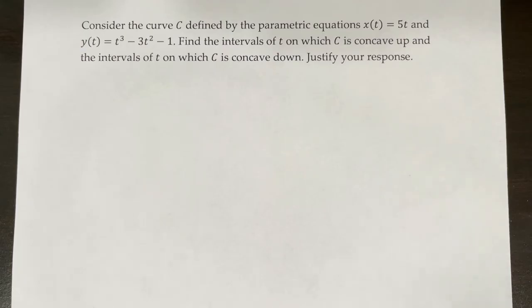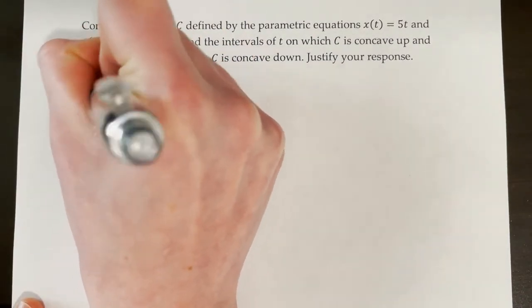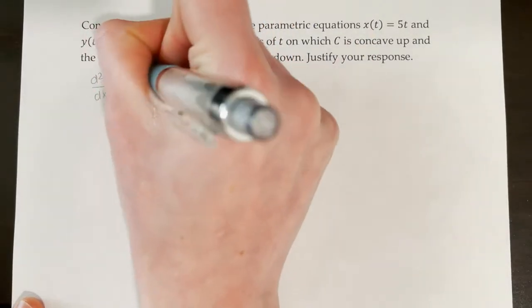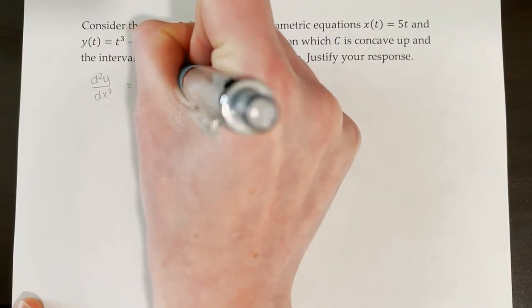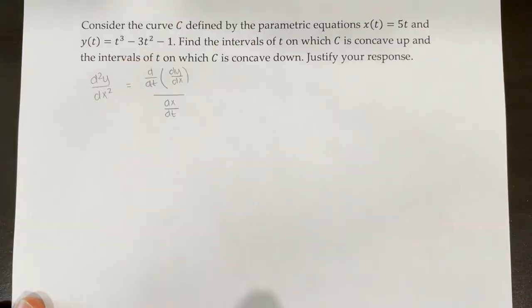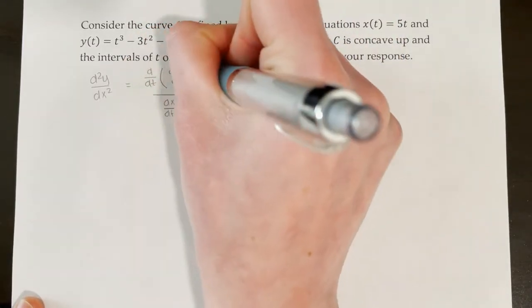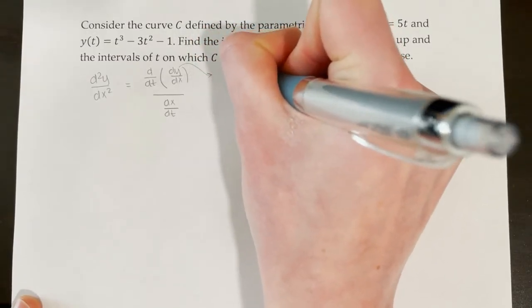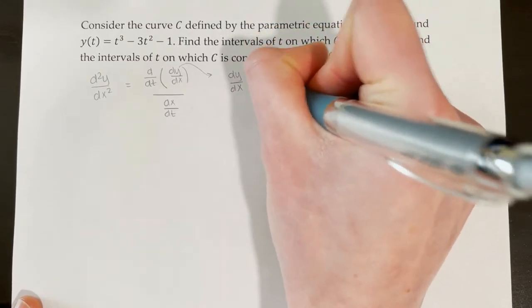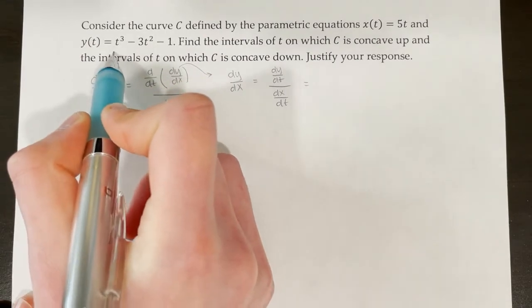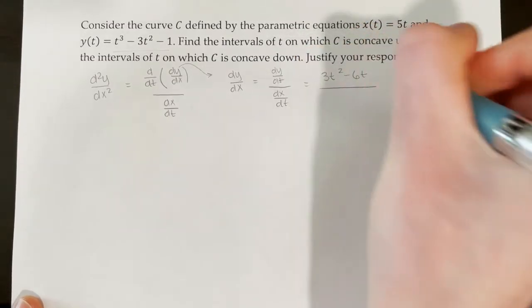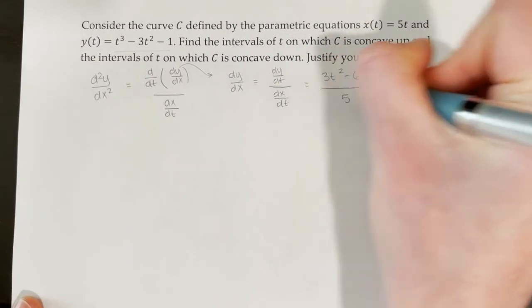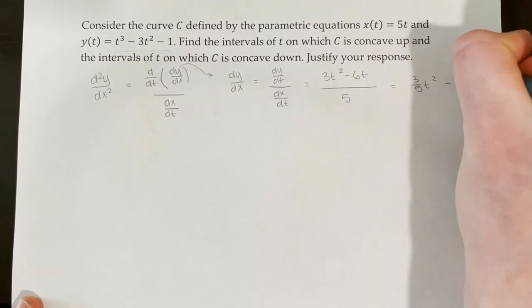Consider curve C defined by x of t equals 5t and y of t equals t cubed minus 3t squared minus 1. Find the intervals of t on which C is concave up and concave down, and justify your response. To determine concavity, we find the second derivative using d dt of dy dx over dx dt. dy dt is 3t squared minus 6t and dx dt is 5, so dy dx equals 3/5 t squared minus 6/5 t.